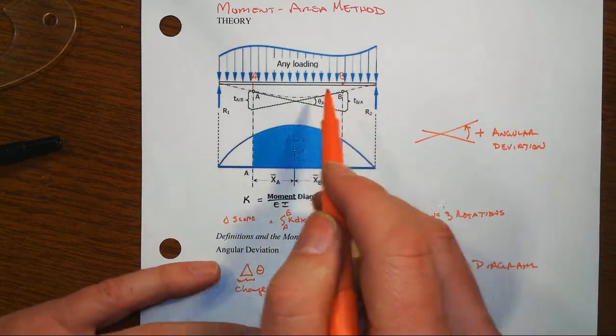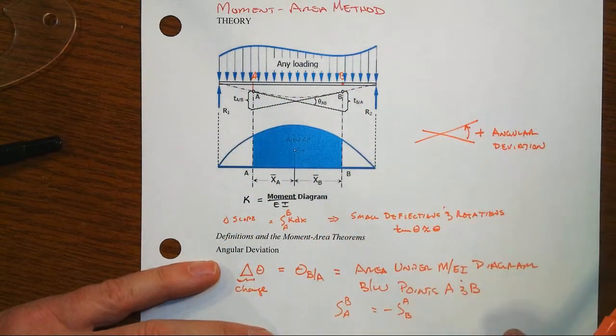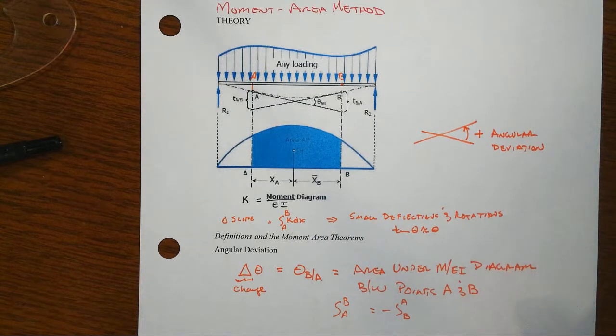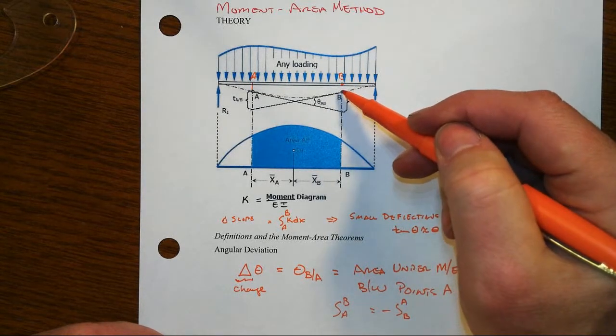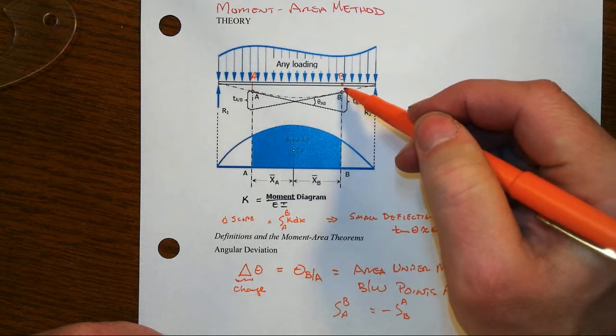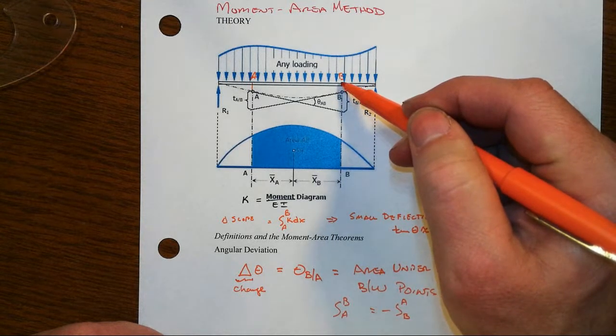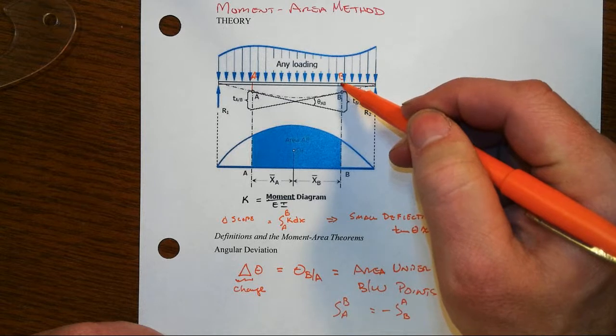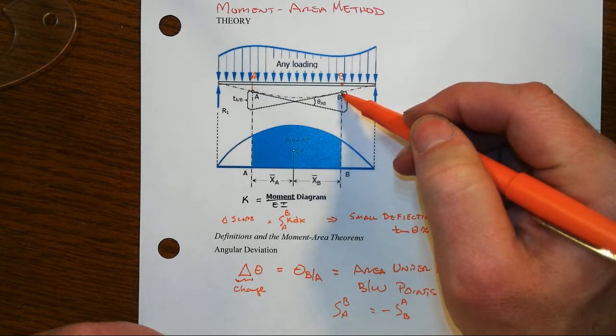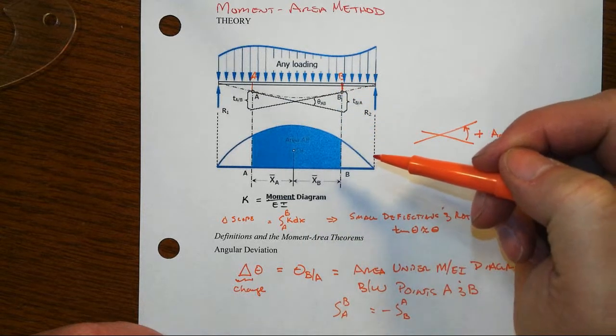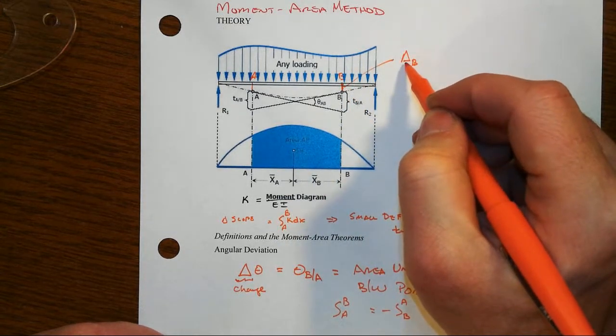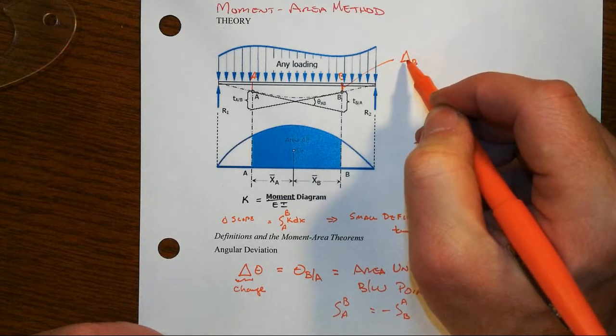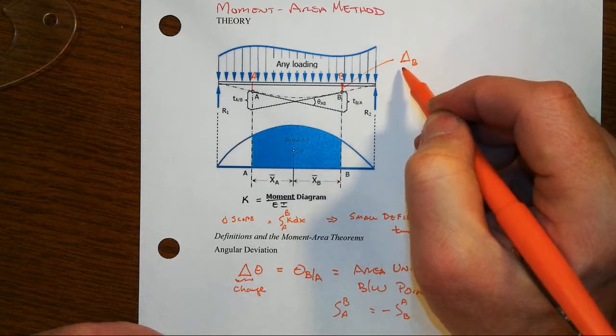The other thing that we're oftentimes interested in is not just slope changes but we'd like to know eventually how much of a displacement we might have at one specific spot. This original position B on the undeflected beam deflects down to the new place; that little direct distance would be our delta sub B, where now this delta refers not to a change but that's typically the symbol that we use for a displacement.